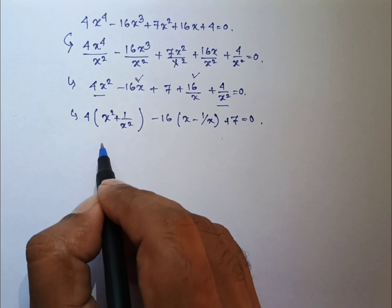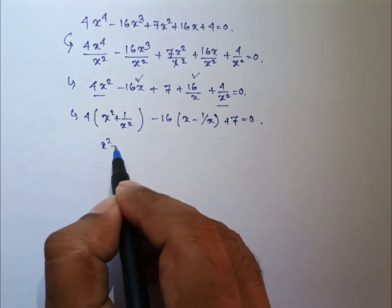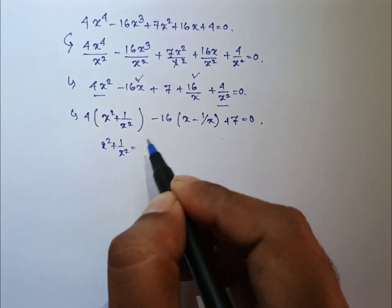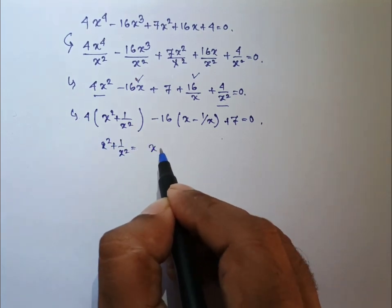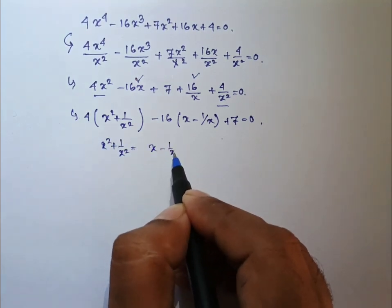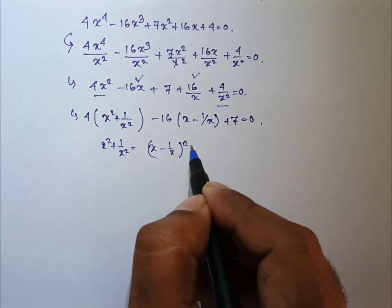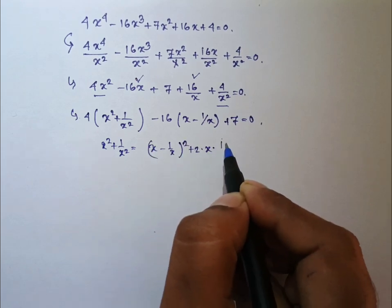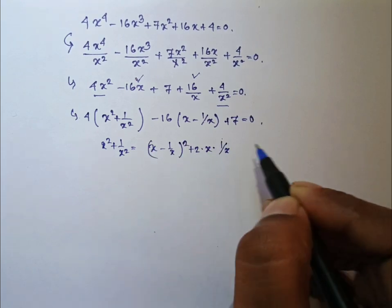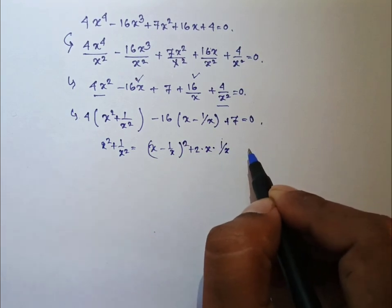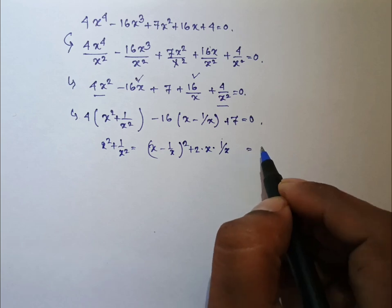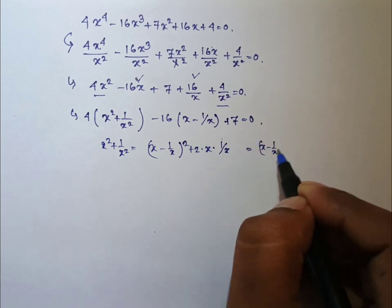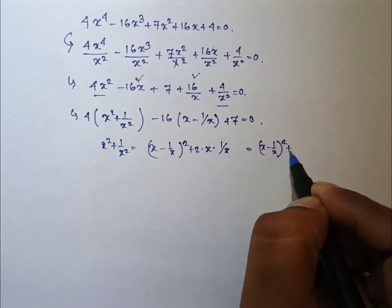Now x square plus 1 by x square can be written as x minus 1 by x whole square plus 2 into x into 1 by x. That is, it is x minus 1 by x whole square plus 2.